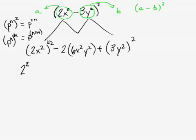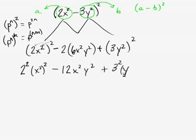And I hate saying the word distribute, but just for right now, just for you to remember, you're kind of distributing this 2 here, and this 2 here. And so you get 2², and this will be (x²)² minus 2 times 6 is 12. x²y² plus 3² (y²) quantity squared.